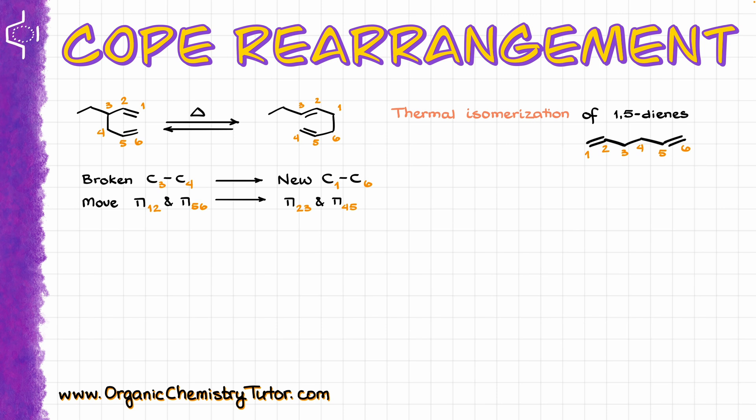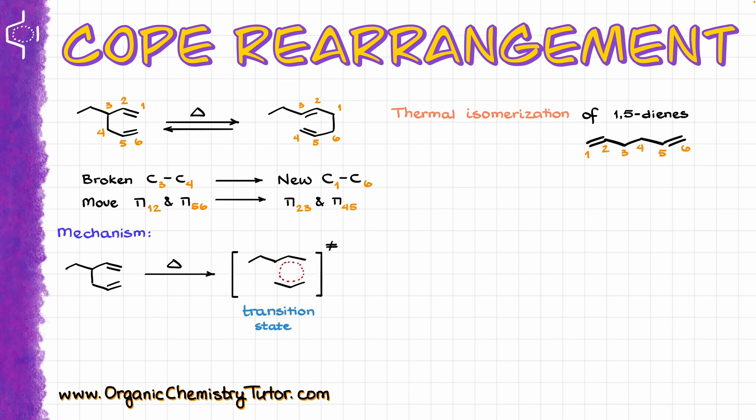Essentially you are kind of flip-flopping your single and double bonds across this molecule. When it comes to the mechanism of this reaction, mechanistically speaking, this is a pericyclic reaction, which means that the transition state in this reaction is going to be a cyclic transition state. So for the purposes of the curved arrows, it actually doesn't matter how exactly we draw them.